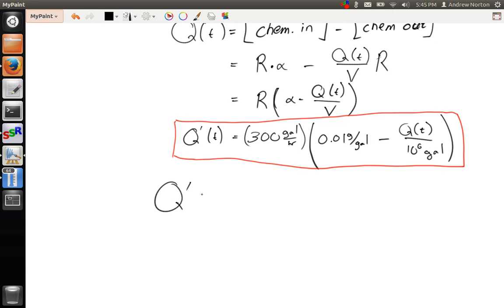So we get q prime of t is equal to 3 grams per hour, minus 3 over 10 to the 4th hours on the bottom, times q of t.